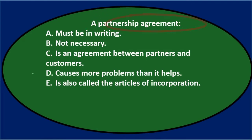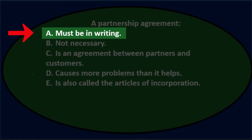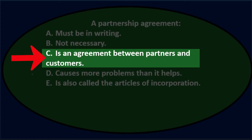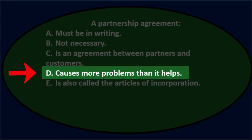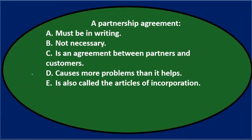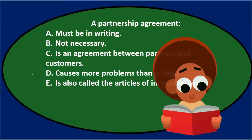Next question: a partnership agreement — A) must be in writing, B) not necessary, C) is an agreement between partners and customers, D) causes more problems than it helps, E) is also called articles of incorporation.